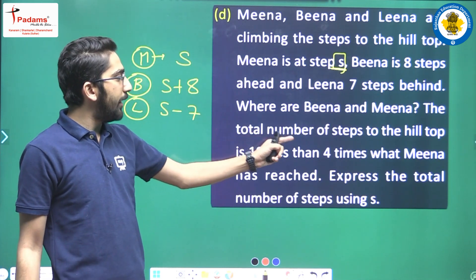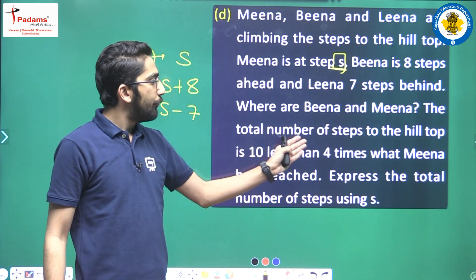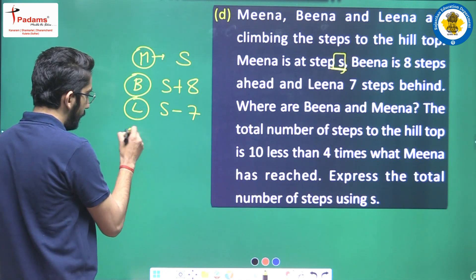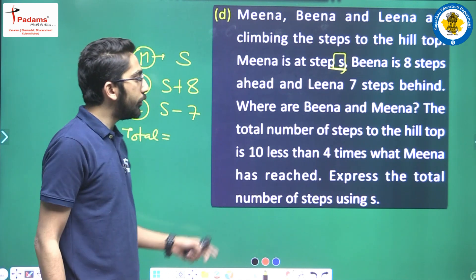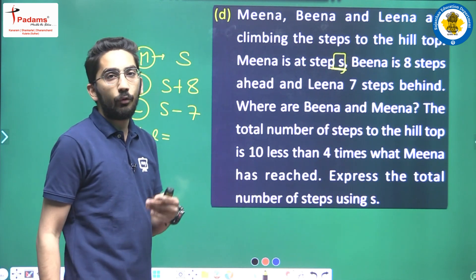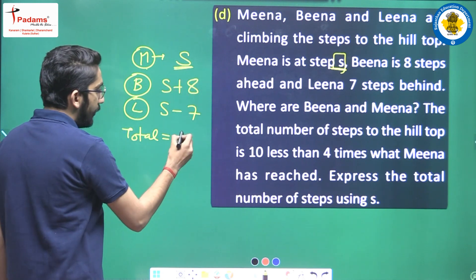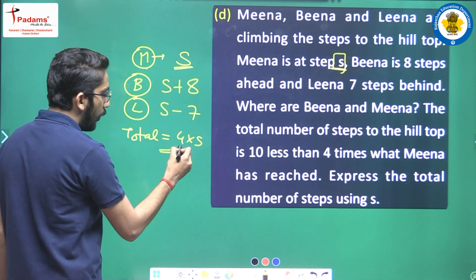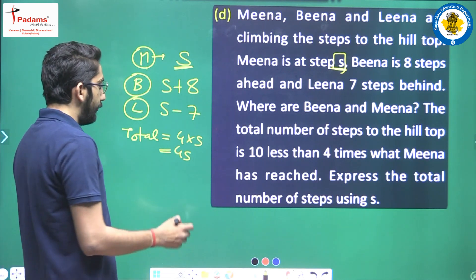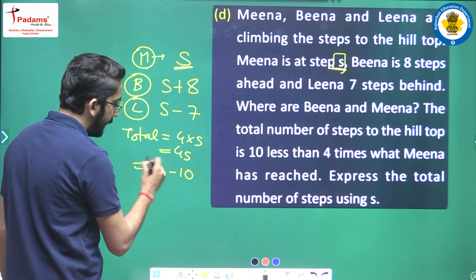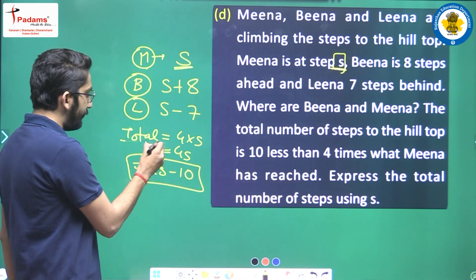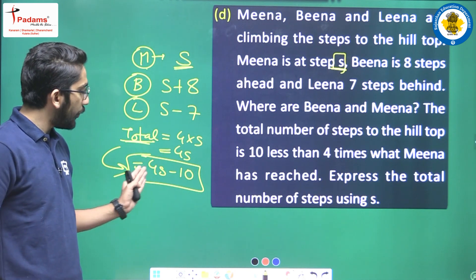The total number of steps to the hilltop is ten less than four times what Mina has reached. Mina is at step S. Four times that is four into S, which is four S. Ten less than that means we subtract ten. So total steps will be four S minus ten. Express the total number of steps using S: it is four S minus ten.